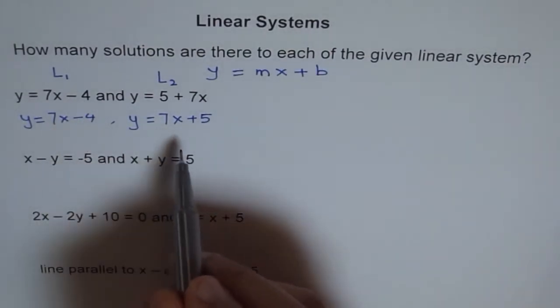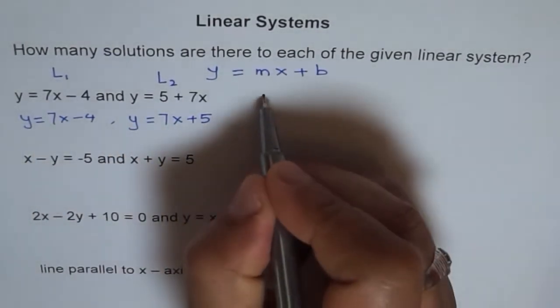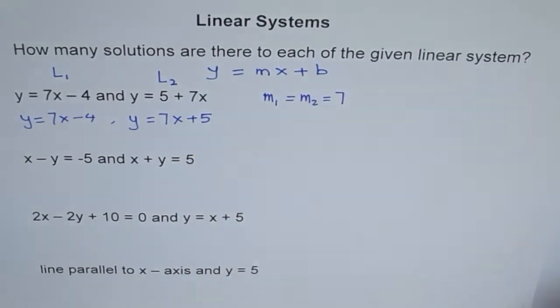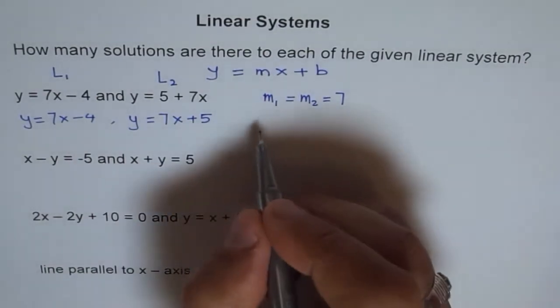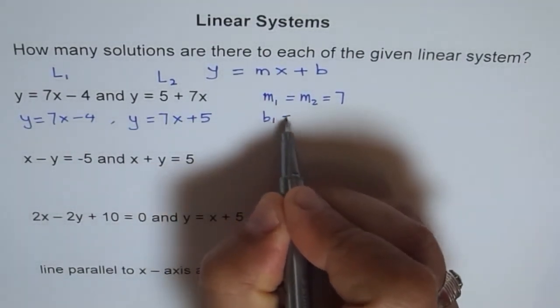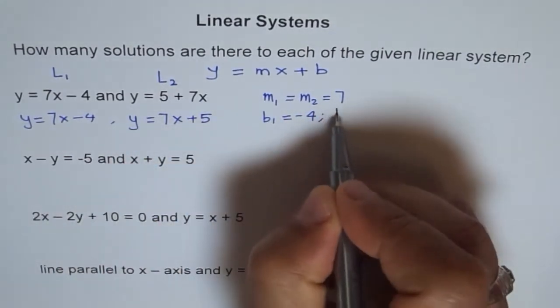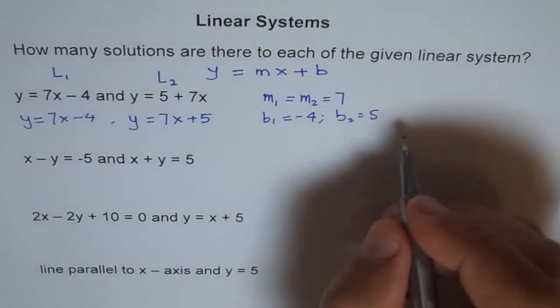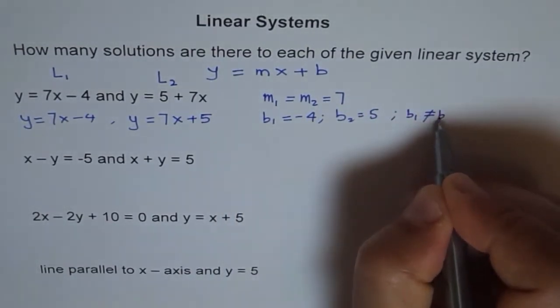Now here, what you see is that slopes m1 and m2 are 7. So we have m1 equals to m2, which is equals to 7. And b is not same. b1 is equal to minus 4, and b2 equals to 5. b1 and b2 are y-intercept. So they are different. So we say b1 is not equal to b2.